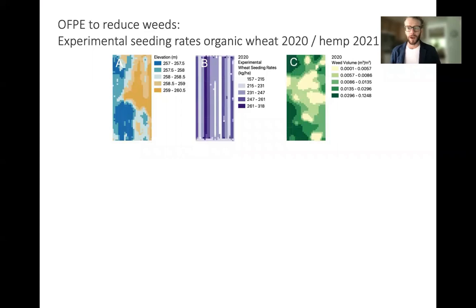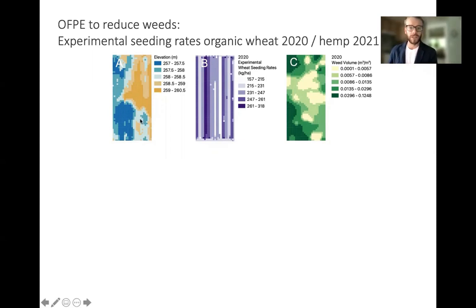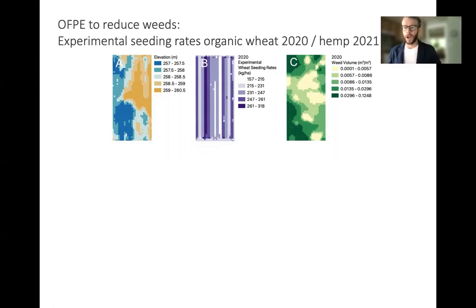Jumping right into the experiment we conducted over the past year or two, you can see a field in southeast Manitoba, Canada — an 80-acre, or 32-hectare, piece. The elevation map shows variation across the field, and in the 2020 season we applied varied wheat seeding rates randomly across the field to determine optimum seeding rates for minimizing weed presence and maximizing yield. Shown in figure C is the weed volume as determined through survey.